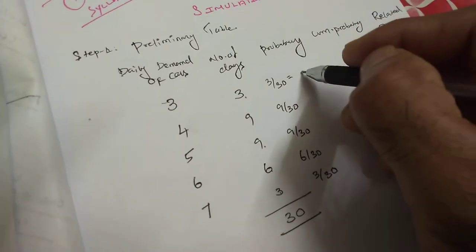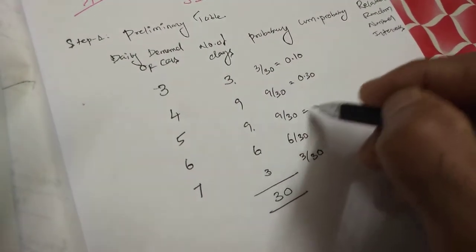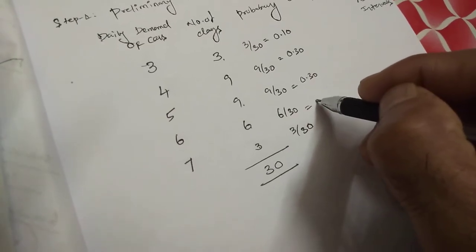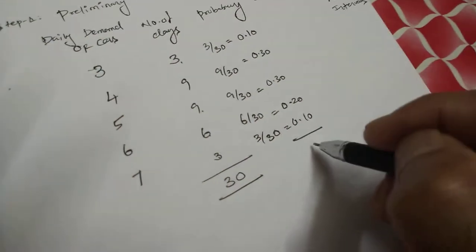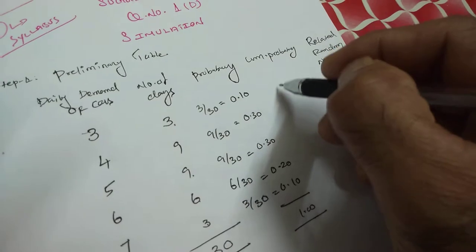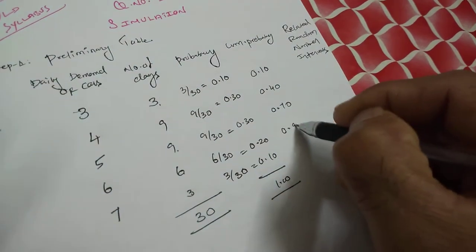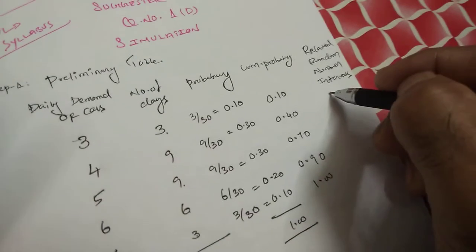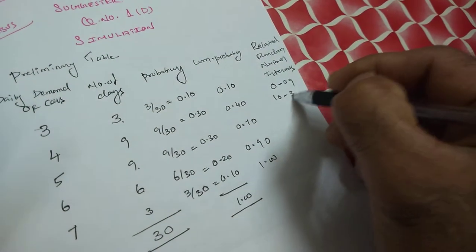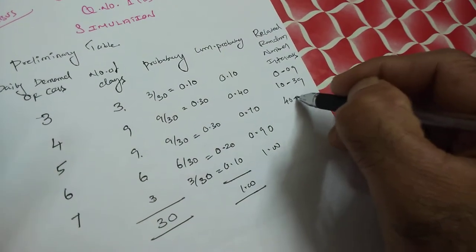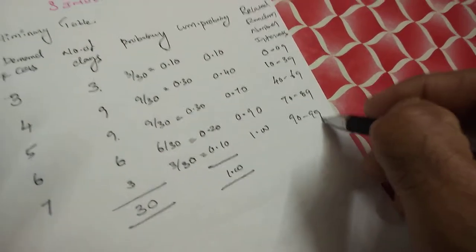Converting to decimals: 3 by 30 is 0.10, 9 by 30 is 0.30, 9 by 30 is 0.30, 6 by 30 is 0.20, and 3 by 30 is 0.10. If you add all these, you will get 1. Cumulative probability: 0.10, 0.40, 0.70, 0.90, and 1. The related random number intervals are: 00 to 09, 10 to 39, 40 to 69, 70 to 89, and 90 to 99. We have now completed the preliminary table.